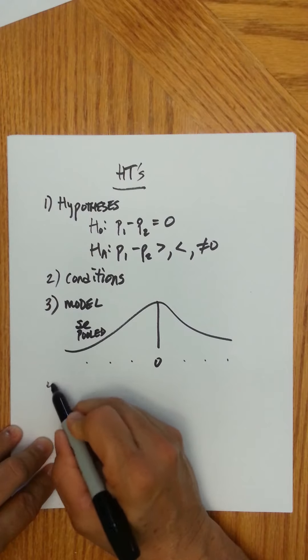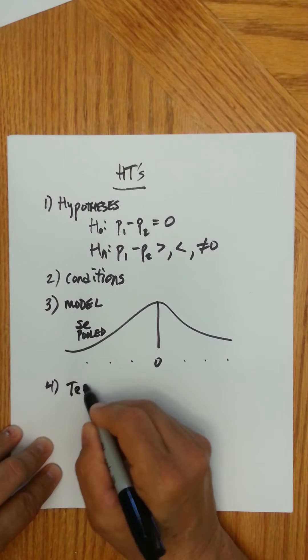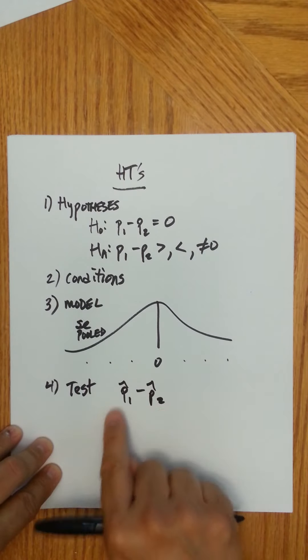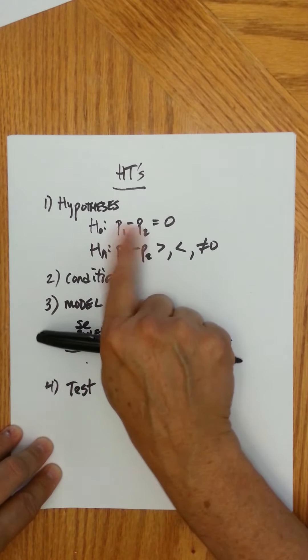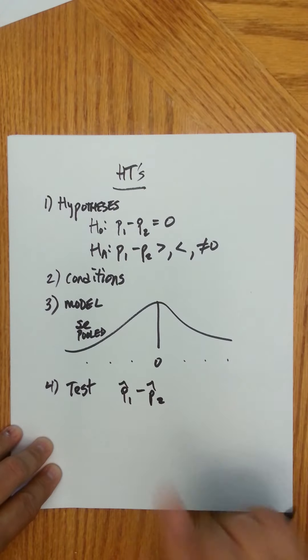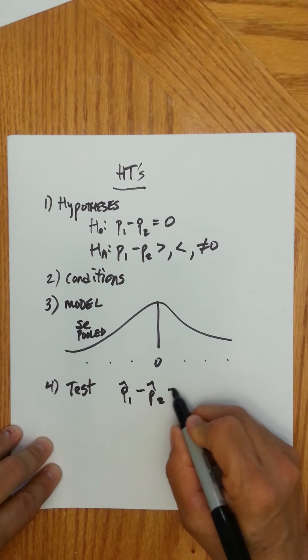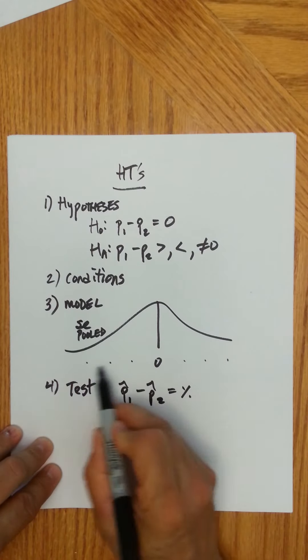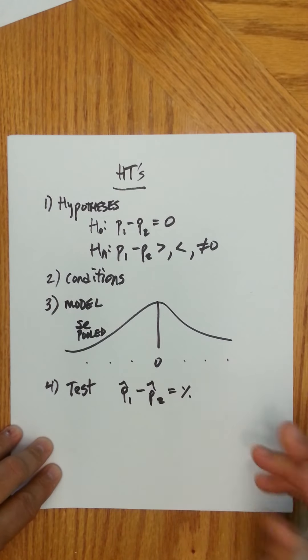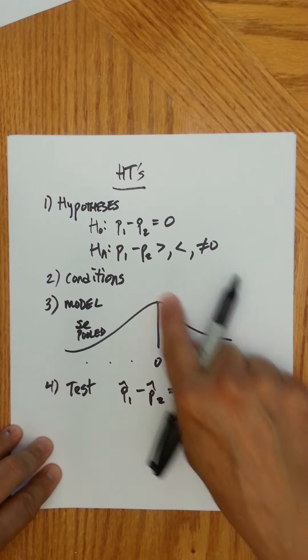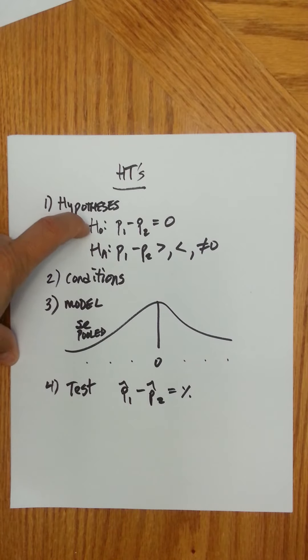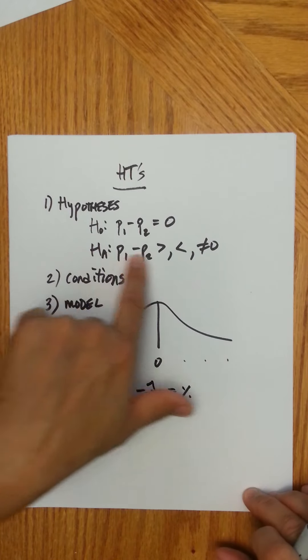And then you're seeing, then you actually test this by finding your specific p hat one minus p hat two. And just be sure that you're subtracting them in the same order that you set them up in. And you're going to get that, you're going to get some kind of percent. And then you're going to see where does that fall on my distribution? Is it close by? If it's close to zero, that means it's likely that there is no difference between the two groups and so then I would not reject my null and there's not enough evidence for the alternative.